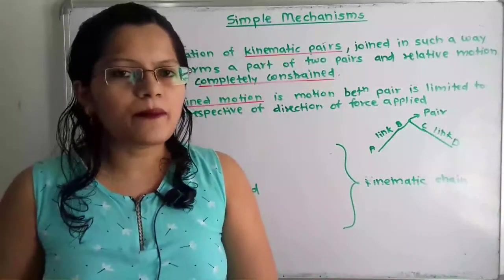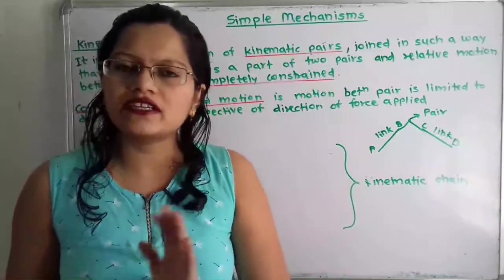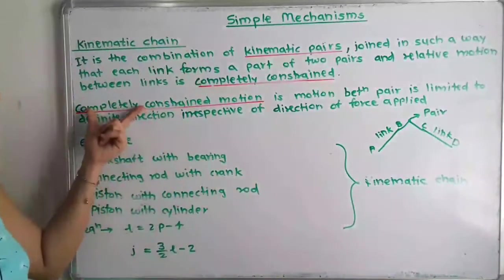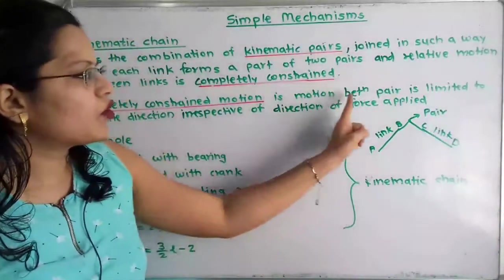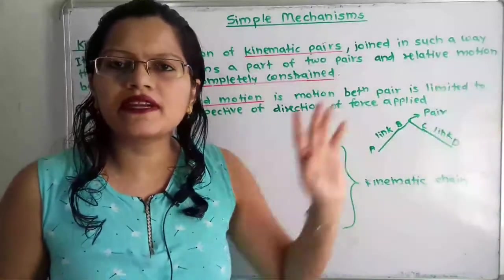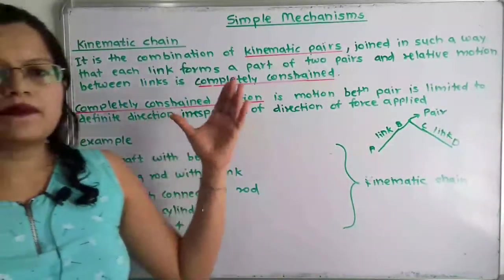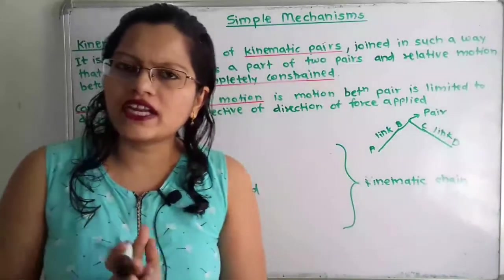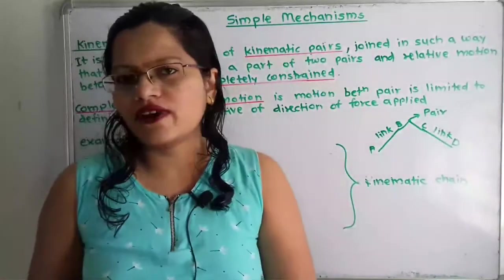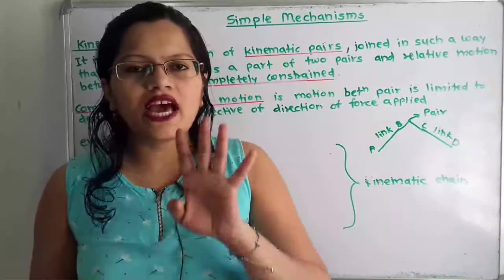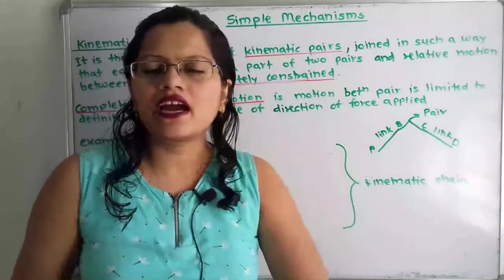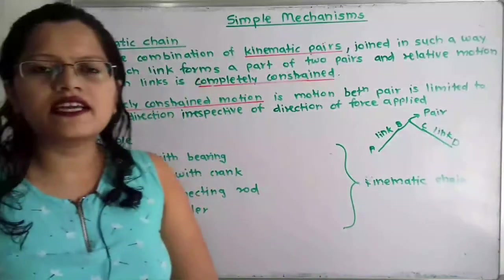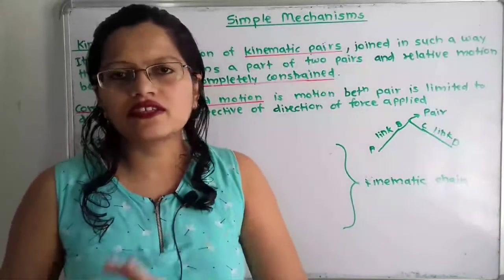Completely constrained motion — also called successfully constrained motion — is when the motion between a pair is limited to a definite direction irrespective of the direction of the applied force. We will understand this concept with the help of a diagram in which there are four links attached with each other, and how the motion is completely constrained will also be explained.